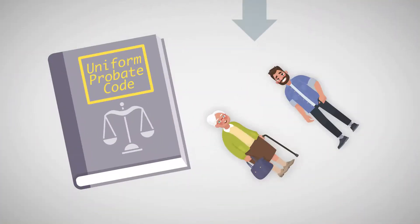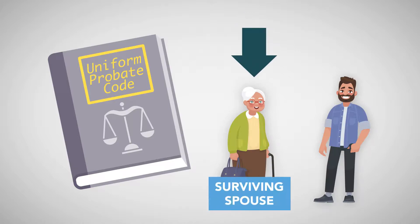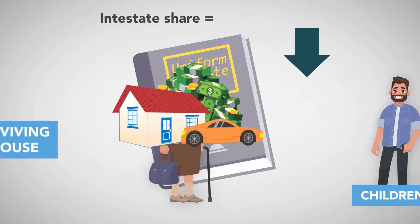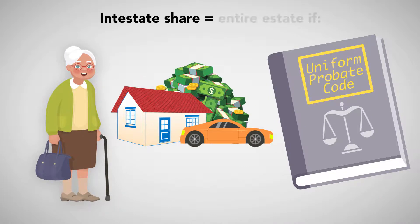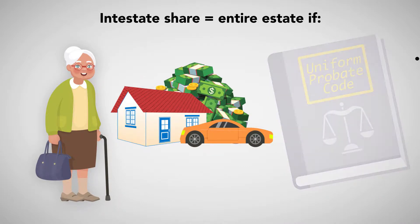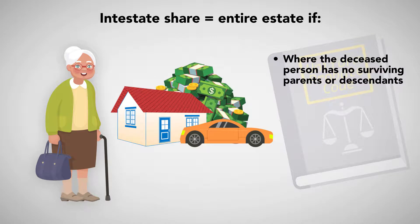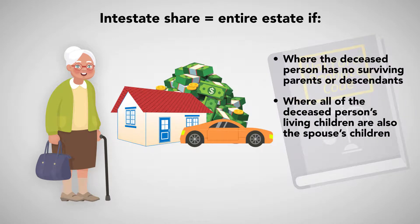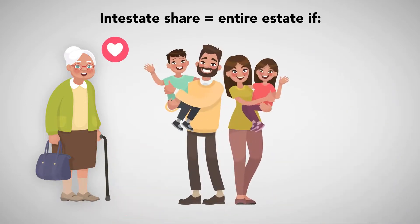The Uniform Probate Code strongly favors the rights of a surviving spouse over those of children. The code provides that the intestate share of a decedent's surviving spouse is the entire estate in two cases: where the deceased person has no surviving parents or descendants, and where all of the deceased person's living children are also the spouse's children. Presumably, this is based on the theory that the surviving spouse has as strong an incentive to provide for the mutual children as did the deceased.